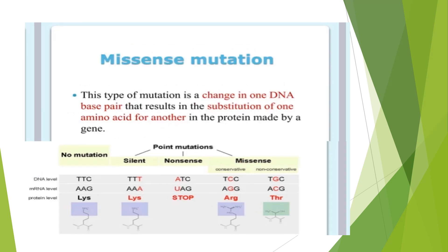Missense mutation is a change in one DNA base pair that results in the substitution of one amino acid for another. For example, if in the sequence TTC the first T is replaced by C, the result is that arginine comes in place of lysine.